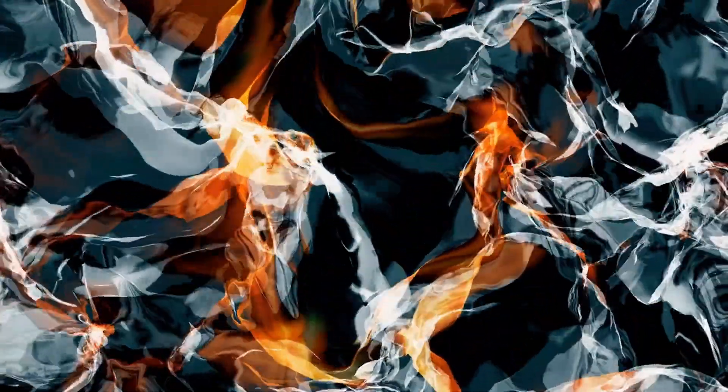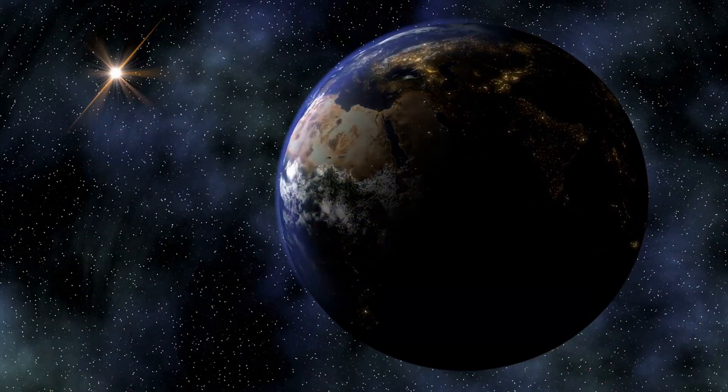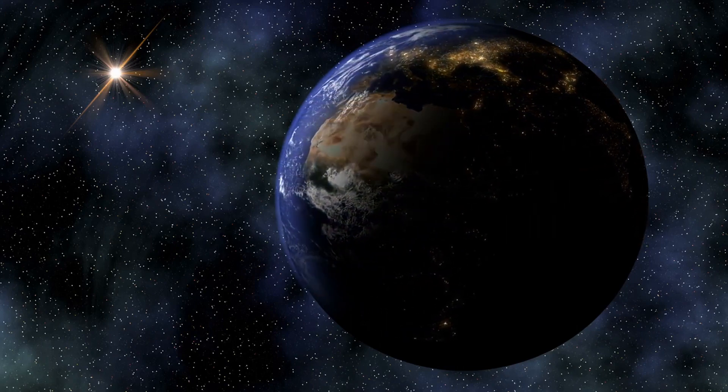If a planet had a different shape, its surface would have to be more elongated or convex, which would lead to a larger surface area. This, in turn, would increase heat loss from the planet and make it less stable.